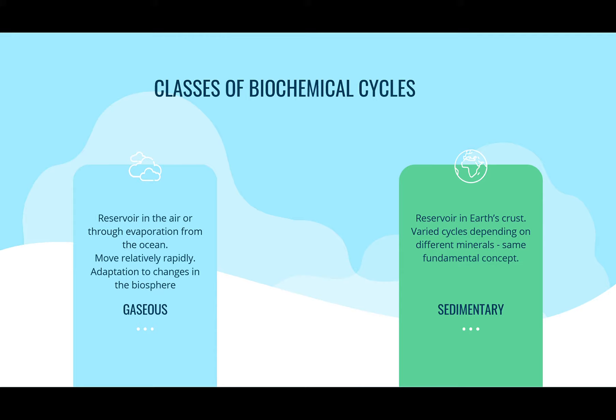On the other side we have the exchange pool or cycling pool, which is smaller, more active, and has a more rapid exchange between biotic and abiotic aspects of an ecosystem. We also differentiate between gaseous and sedimentary biochemical cycles. The gaseous reservoir is in the air or through evaporation from the ocean and moves relatively rapidly. The sedimentary cycle describes a reservoir in the earth's crust, with varied cycles depending on different minerals but sharing the same fundamental concept.